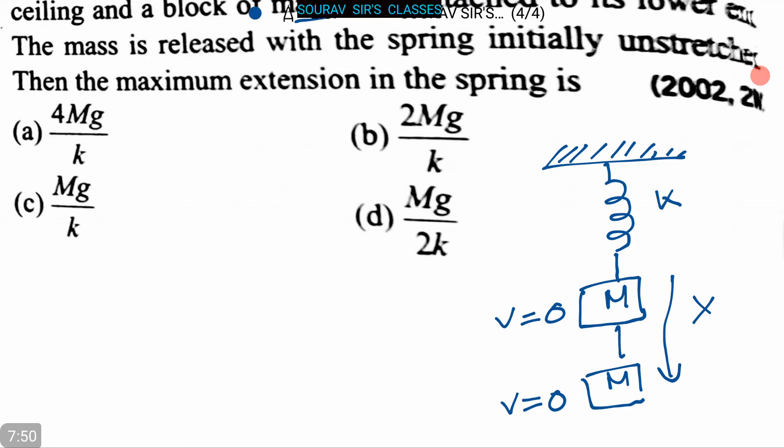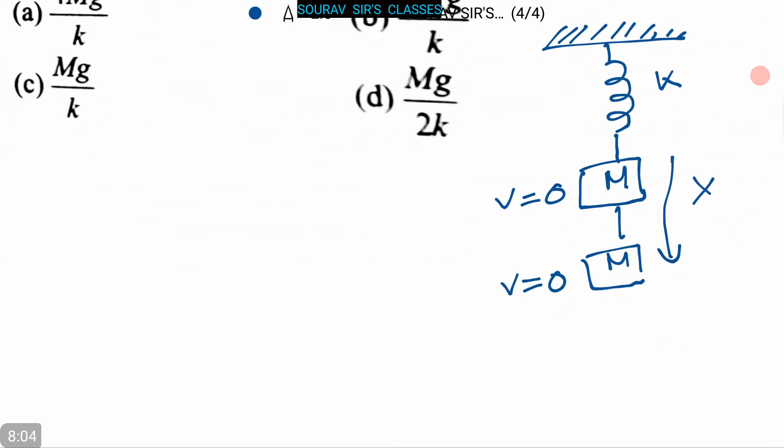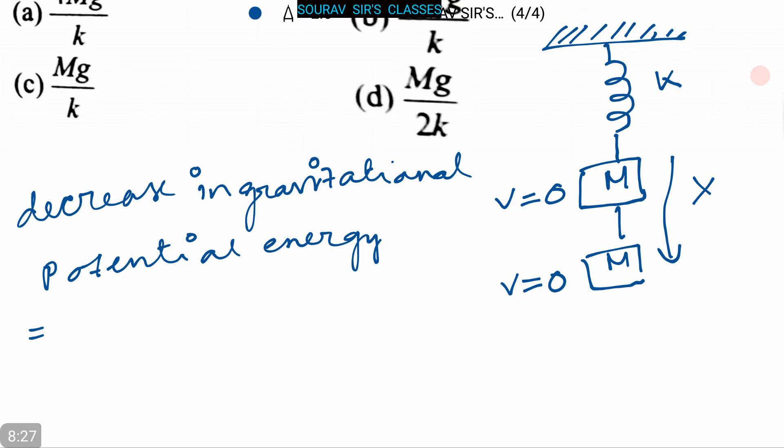If x is the maximum extension of the spring, from the conservation of mechanical energy, the decrease in gravitational potential energy is equals to the increase in elastic potential energy.